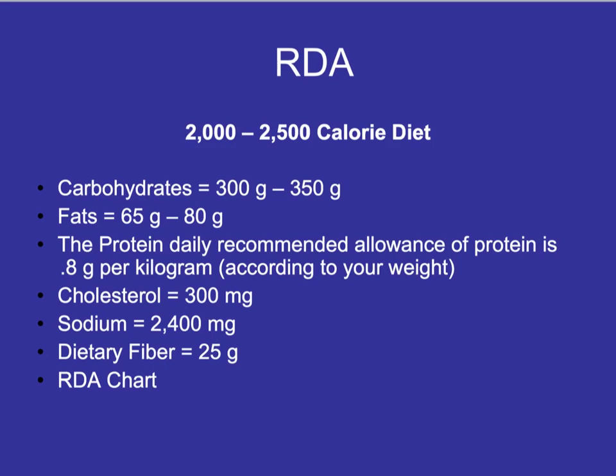Coach Jagoulos here. We left off last lesson on diet, food, and nutrients and discussed a little bit of RDA. Remember, RDA is recommended daily allowance. The average person consumes about 2,000 to 2,500 calories, or that should be close to what they consume in order for them to maintain their weight.